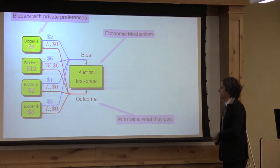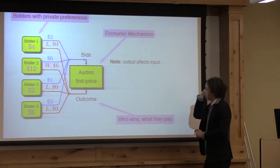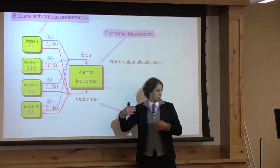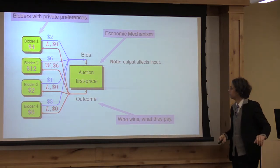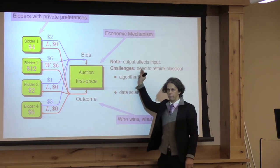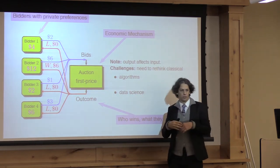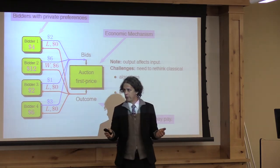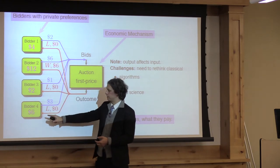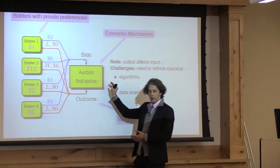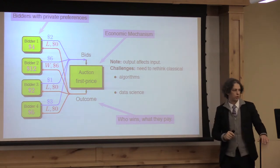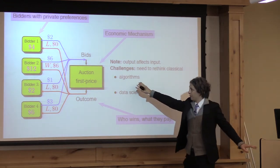The way the auction chooses its outcome affects the input the auction gets, because the rules matter for how you behave in such a system. From a computer science algorithms perspective, inputs are usually fixed exogenously — you just want a good outcome for the input you got. But here, the real input I care about is the actual values — $4, $12, $2, $6 — but my auction never saw that. It only saw the input bids: $2, $6, $1, $3. That's a challenge for algorithms that don't get the input they want.